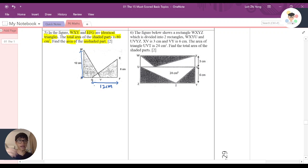Why? Because they're identical triangles. What's different is just that one is standing, one is sleeping. The total area of the shaded parts is 80 cm squared, meaning this part plus this part is 80 cm squared.